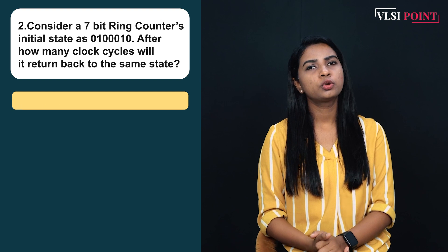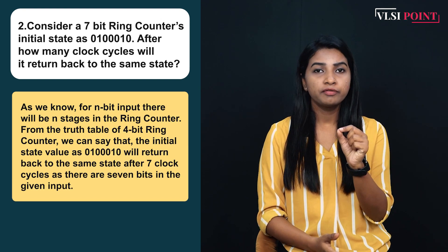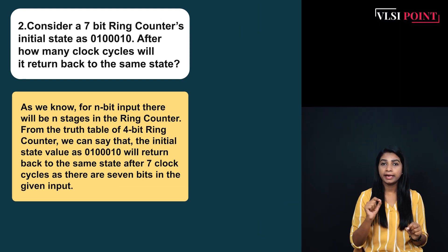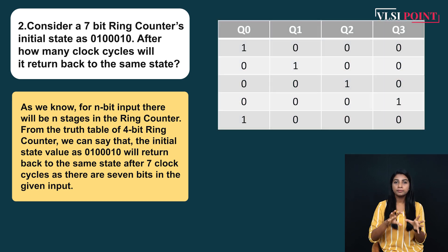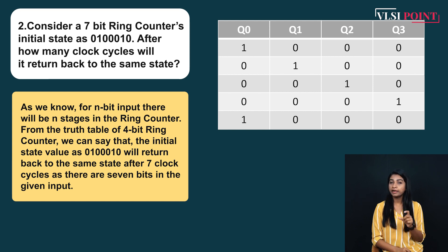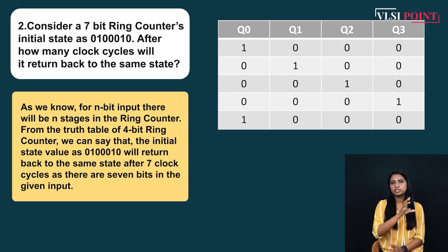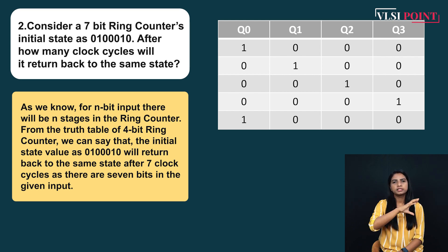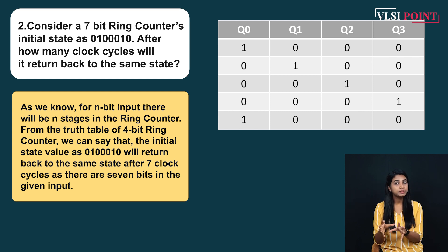So coming to the solution part, as you all know in a ring counter, if there are N bits, then N stages will be there. That means to come to the same state you require N number of clock cycles. So here we have 7 bits, so you need 7 clock cycles to come back to the same state. You can also try doing the shifting operation — shift one bit by bit and you will get the same state after 7 clock cycles. So the answer is 7 clock cycles.